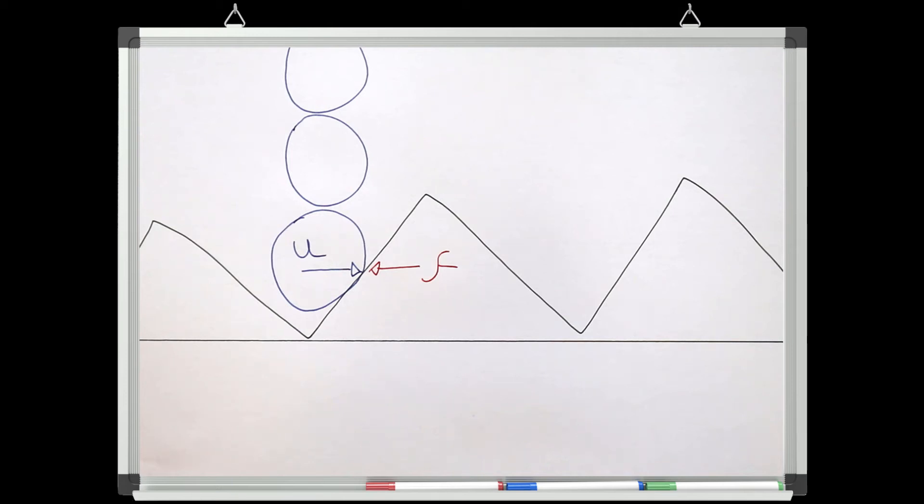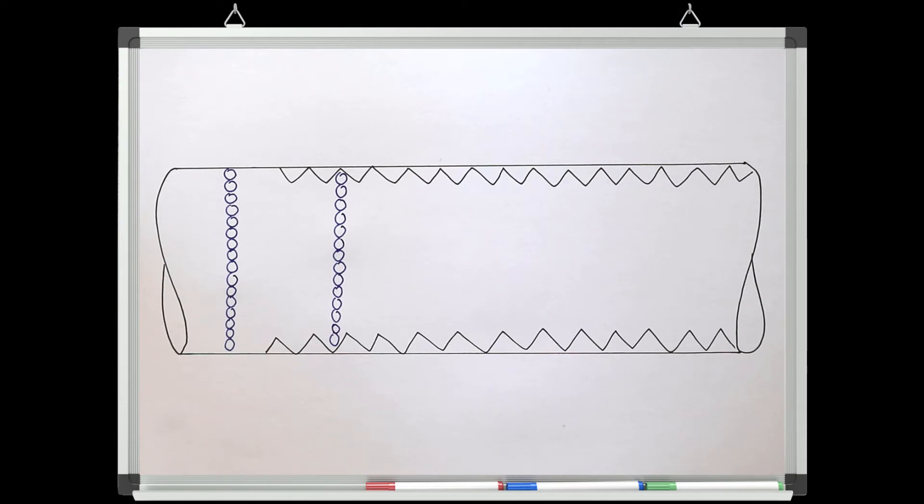So for real pipe flows, where we're considering friction, the velocity of fluid right at the pipe's wall will always be zero.